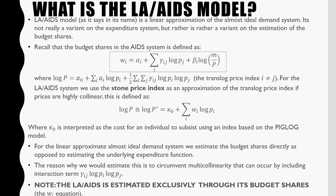Recall that the budget shares in the Almost Ideal Demand System are defined as the following, where this last term — this P term in our Index of Supernumerary Income — is given by our Translog Price Index. For the Linear Approximate Almost Ideal Demand System, we swap that out and use the Stone Price Index, which is an approximation for the Translog Price Index if our prices are highly co-linear. This is defined as log P, which is our price index, equal to kappa nought plus the summation of all budget shares i times log pi. Notice that the coefficients on each one of these prices gives us our budget share of that index.